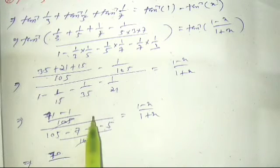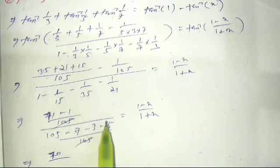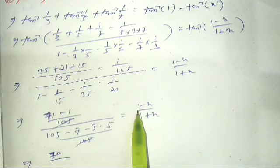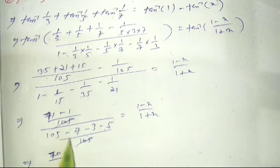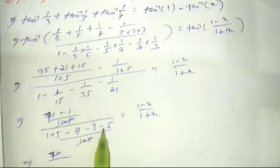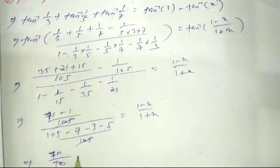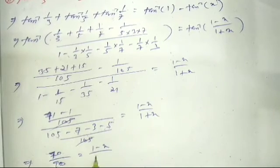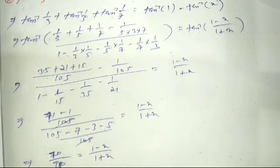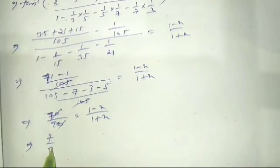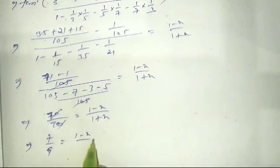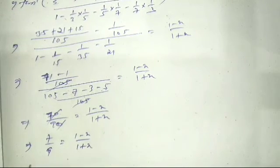So the numerator is 105 and 105 cancel; 105 minus 7 minus 3 minus 5 equals 90, giving 90/105. For the denominator, applying LCM 105: 105 minus 7 minus 3 minus 5 gives 90. So we get 90/105 equals (1 minus x)/(1 plus x), which simplifies to 7/9 equals (1 minus x)/(1 plus x).